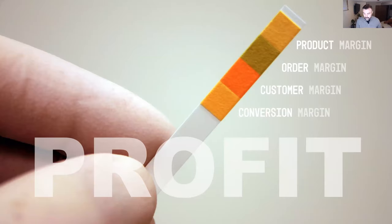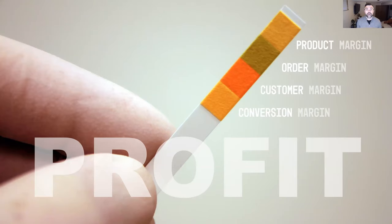So today, as we talked about, I'm going to introduce you to the order margin formula, or the order margin tree. What the order margin tree does is basically look at all of the elements related to your orders — anything that's tied to a variable related to the order.